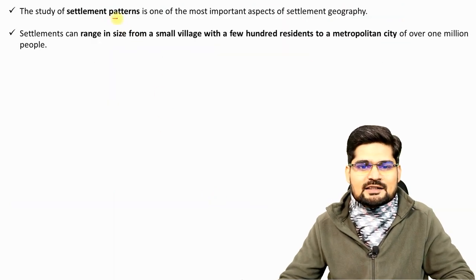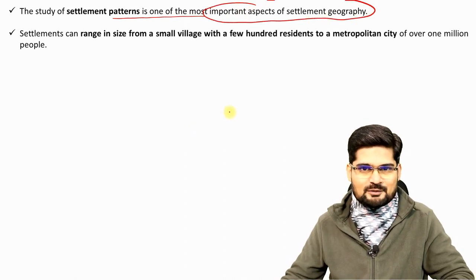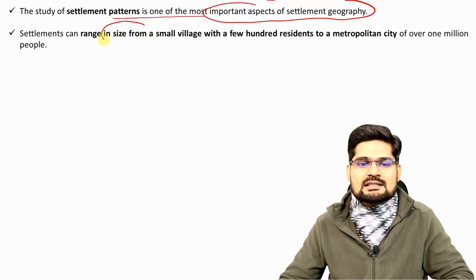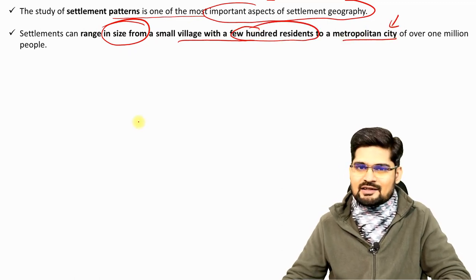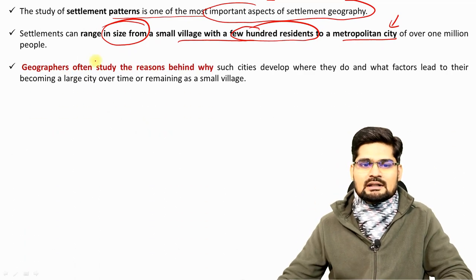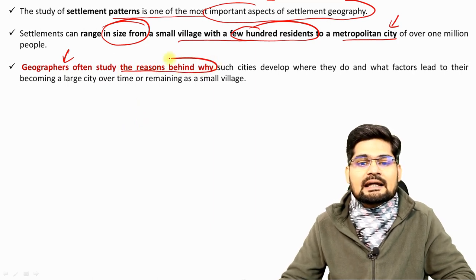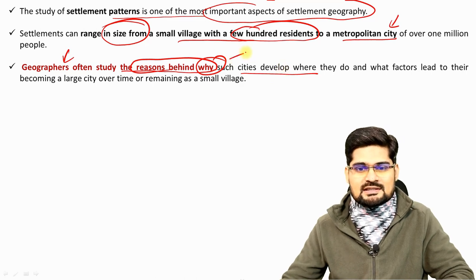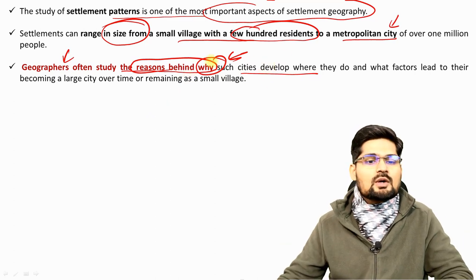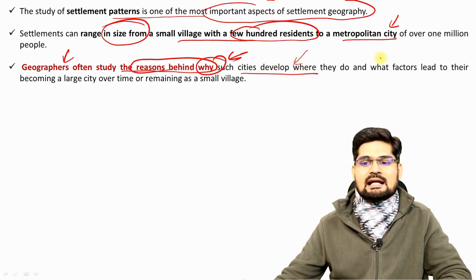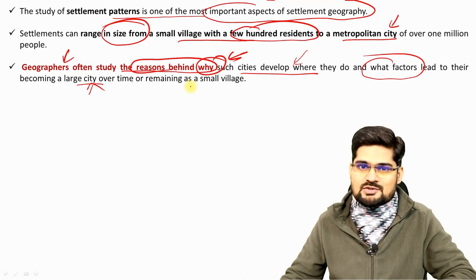The study of settlement patterns is one of the core aspects of settlement geography. Settlements can range in size from a small village with a few hundred residents to a metropolitan city — remember the hierarchy of settlements. Geographers study the reasons behind why such cities develop. We develop understanding and analyze the factors that lead to the becoming of a large city from a small settlement and how it evolves gradually.